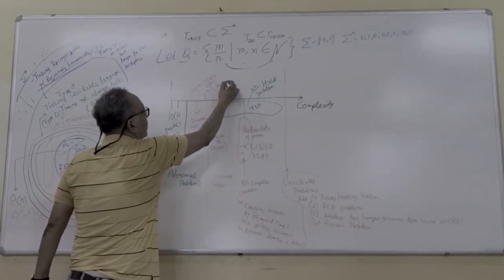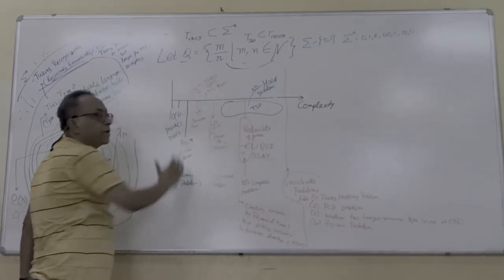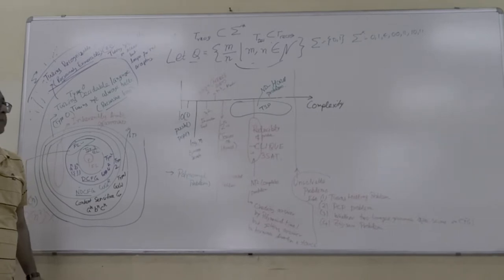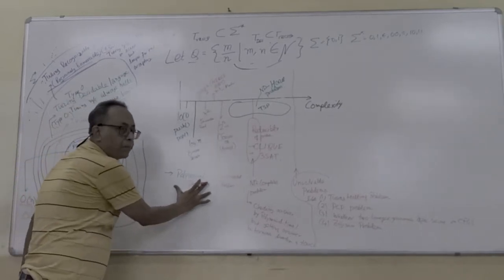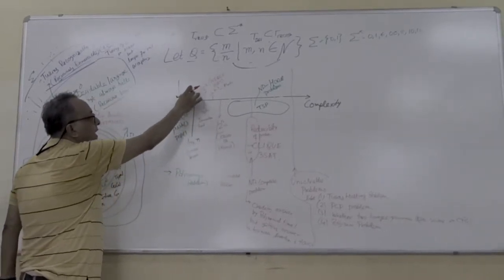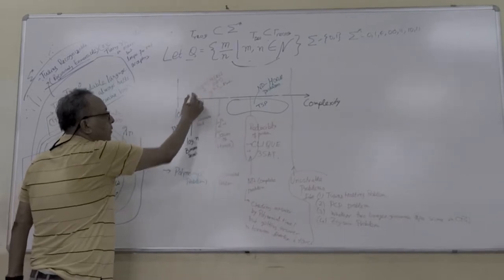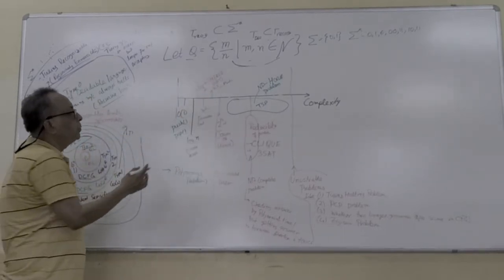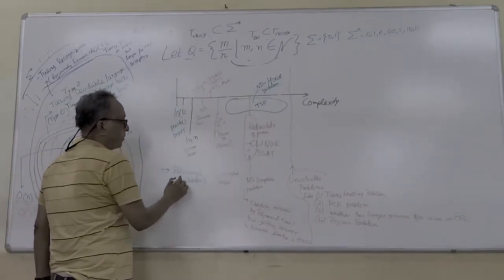But these problems, as computer scientists, are very easy problems. We call them polynomial problems. Remember that O(1), O(n), O(n square), O(n cube), these are polynomial problems. These are easy problems.